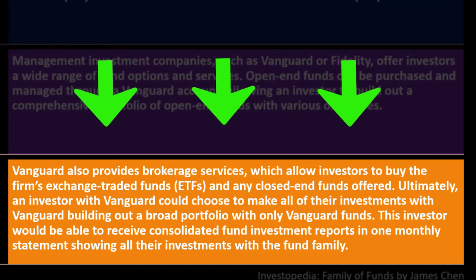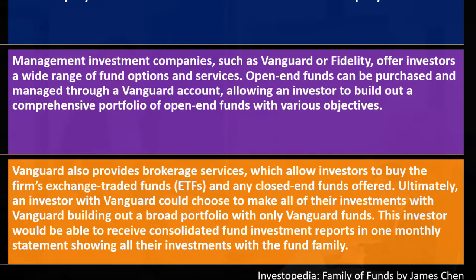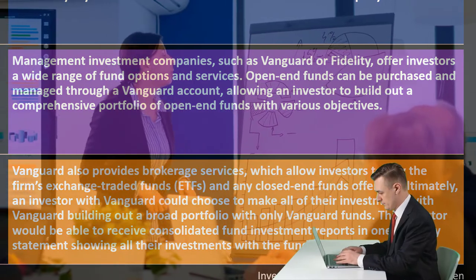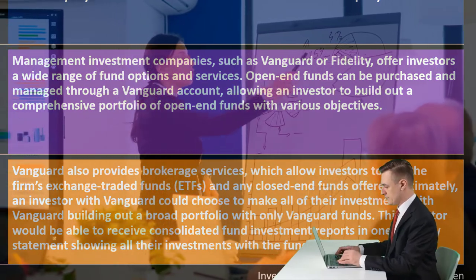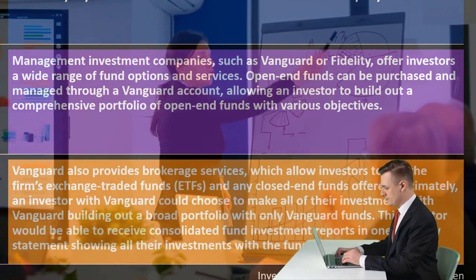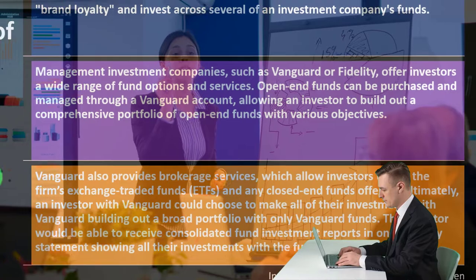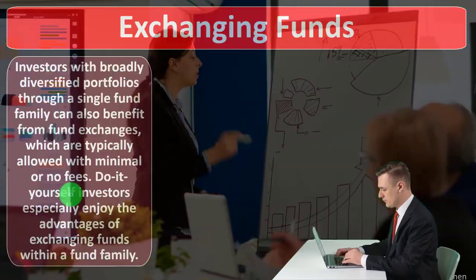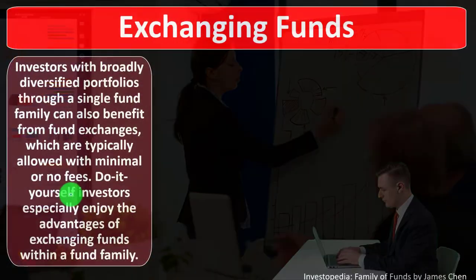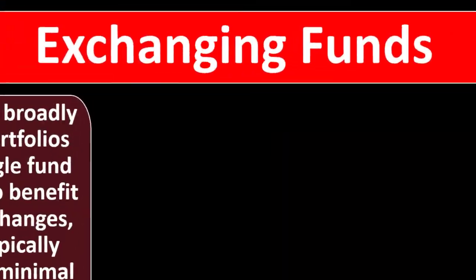Another consideration is whether you want all your investments with one institution — even if you can diversify with its funds — or whether you'd prefer multiple institutions to diversify between them. For instance, you might not think Vanguard would go bankrupt, but you may still be concerned about security risks, which could be a reason to spread investments across multiple fund families.